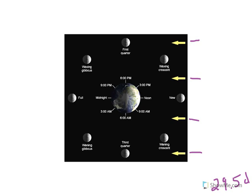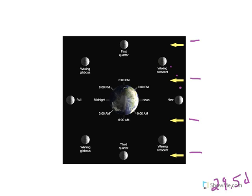The next day we would see the moon a little bit farther, the next day a little bit farther, and so on until we reach first quarter. From the time of new moon to first quarter is roughly seven days of travel time to get one-fourth of its way around the Earth. During that time, it is in the waxing crescent phase.